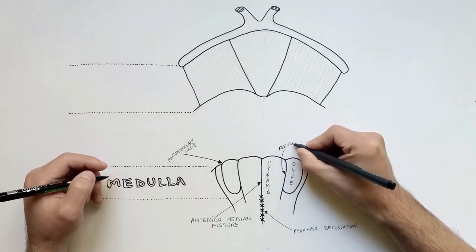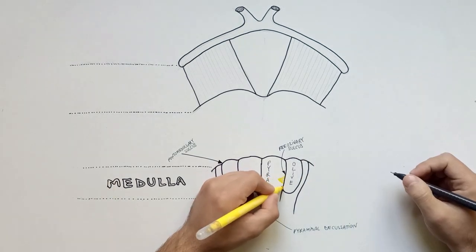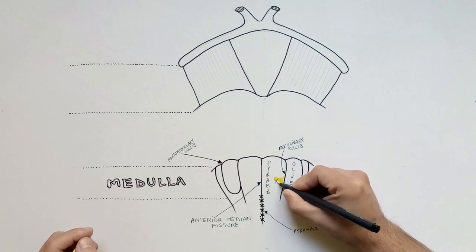Between pyramid and olive is the preolivary sulcus. At this level the hypoglossal nerve or the twelfth cranial nerve originates from the medulla.